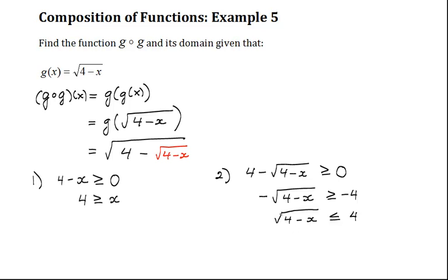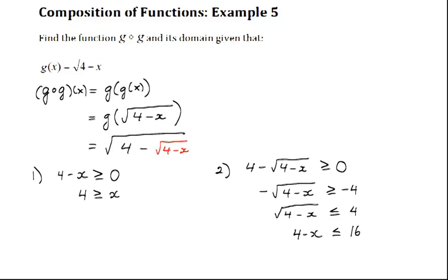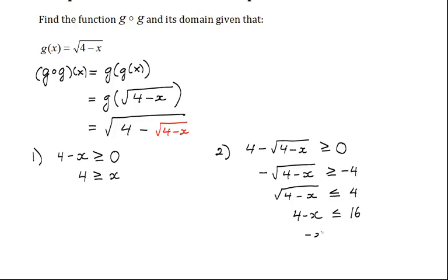Now I have to square both sides to get rid of this square root. So I get 4 minus x is less than or equal to 16. Bring the 4 to the other side, I get negative x is less than or equal to 12. Now divide both sides by negative 1, I get x has to be greater than or equal to negative 12.